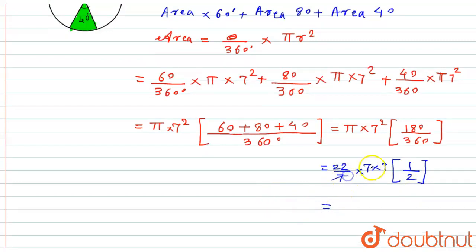Now after solving this, I will get the answer. 7 and 7 get cancelled, 2 ones are 2, 2 ones are 2, 2 ones are 2, 2 ones are 2, and 7 multiplied by 11 gives me 77. So here I got the area of the shaded region, that is 77 centimeter squared. I hope you will like the solution, thank you.